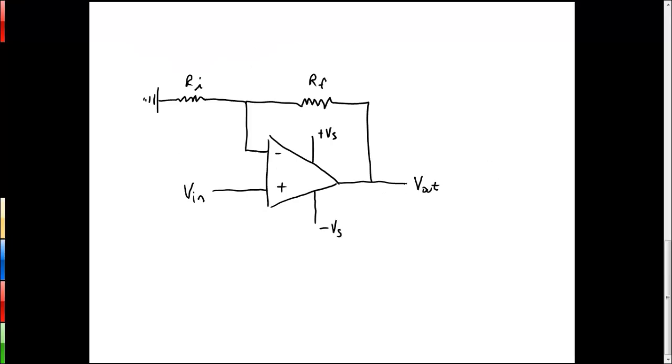So here we have an op amp configured in a non-inverting amplifier circuit. And basically what happens is that the negative terminal is connected to ground through resistor RI. The voltage in, V in, is connected to the positive terminal. That's the voltage that we're interested in amplifying. And V out is connected back through to the negative terminal through some feedback resistor RF. I've also drawn in the positive and the negative voltage supplies to be thorough in this case.